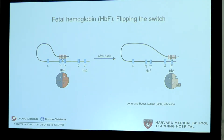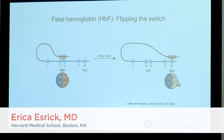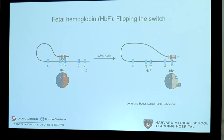This slide depicts, as background, genetic expression at the beta-globin locus over time. On the left is during fetal life, when high levels of gamma globin are expressed. When combined with alpha globin, they form fetal hemoglobin or hemoglobin F, which is a healthy non-sickling type of hemoglobin.